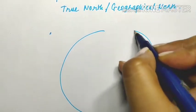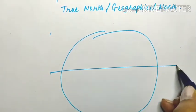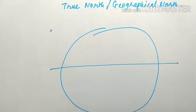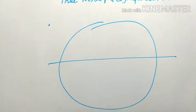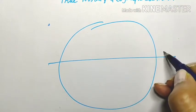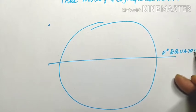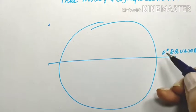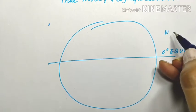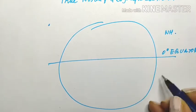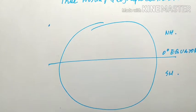As we all know, the Earth is divided into two halves by the equator, which is at zero degrees. The northern half is known as the northern hemisphere, and the southern half is known as the southern hemisphere.